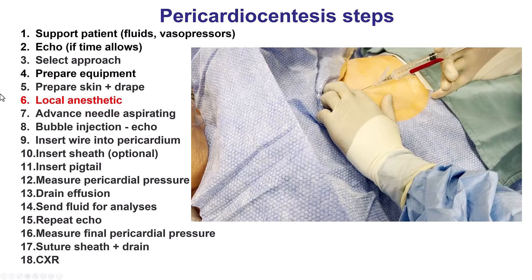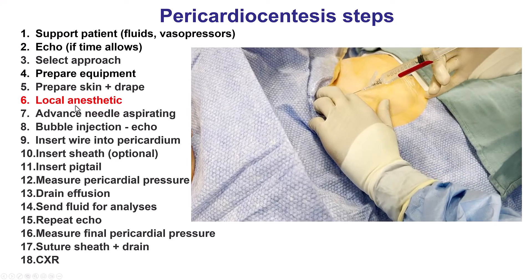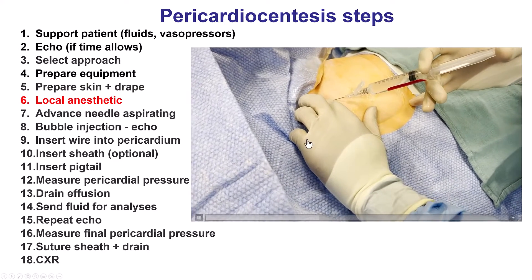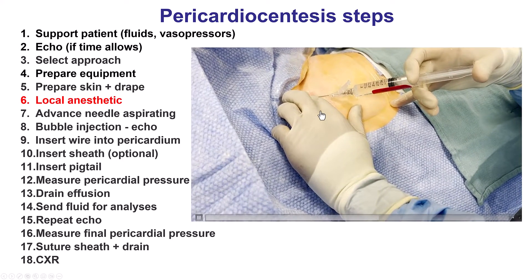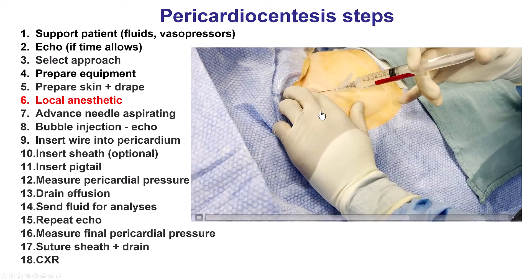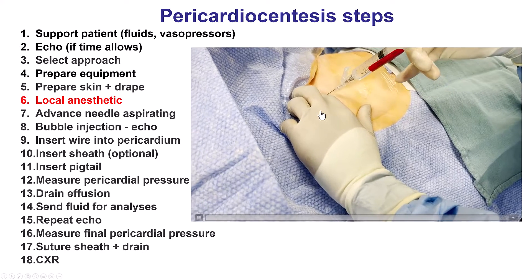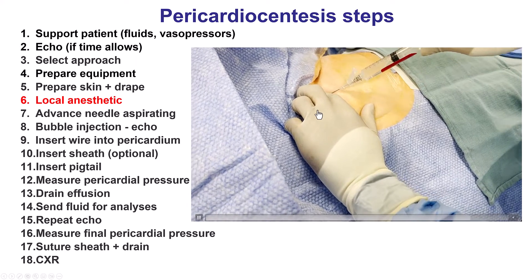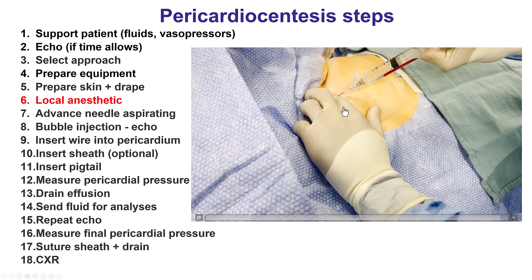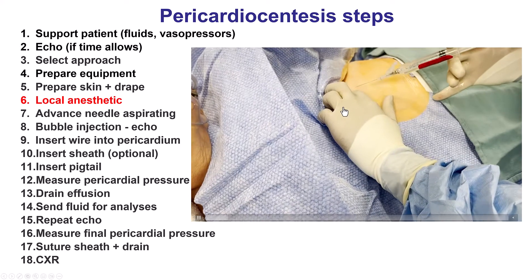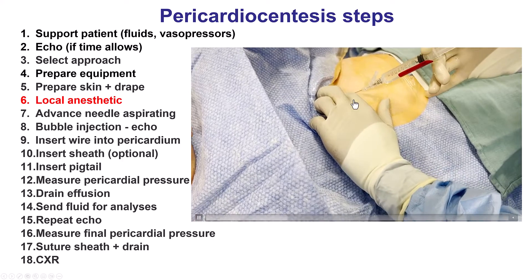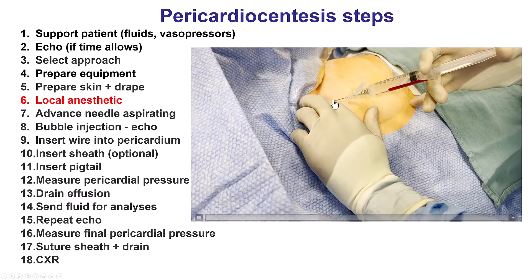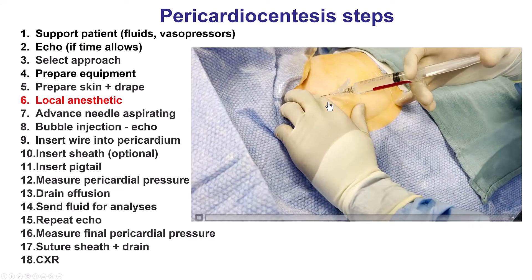The sixth step is to give a local anesthetic. This is an example of subxiphoid pericardiocentesis. Typically, we want to hit the bottom of the sternum, give some lidocaine, and then turn under and go beneath the sternum.